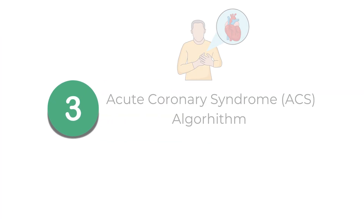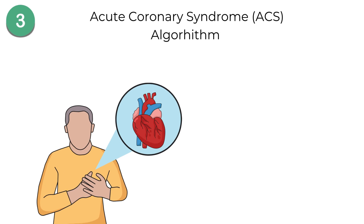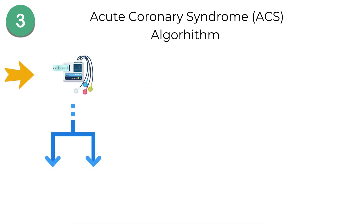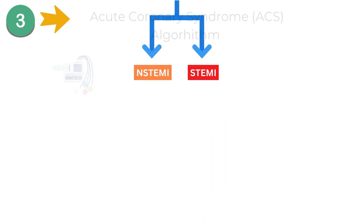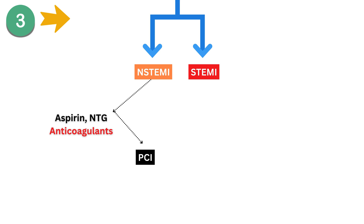Moving on to acute coronary syndrome, or ACS. When a patient has chest pain suggestive of a heart attack, follow the ACS algorithm. First, get an ECG to classify the type of ACS. For non-STEMI, treat with medications like aspirin, nitroglycerin, and anticoagulants, and plan for coronary angiography within 24 to 48 hours.